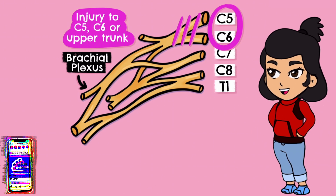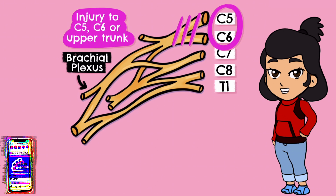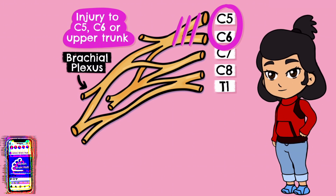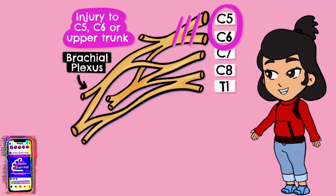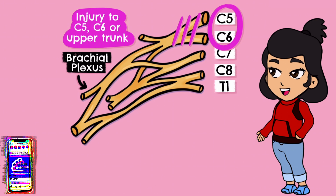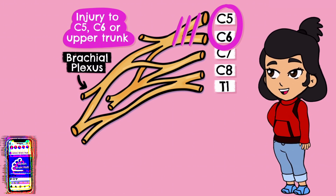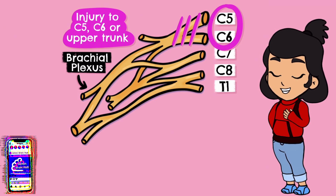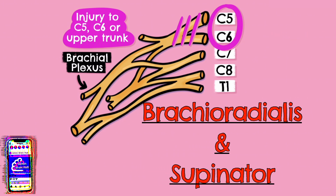The clinically relevant nerves derived from these two roots may be thought of as: those supplied by C5 — the suprascapular nerve which supplies supraspinatus and infraspinatus, the musculocutaneous nerve which supplies biceps and brachialis, and the axillary nerve which supplies deltoid and teres minor — and also the nerves derived from C6, namely the radial nerve which innervates brachioradialis and supinator amongst other things.